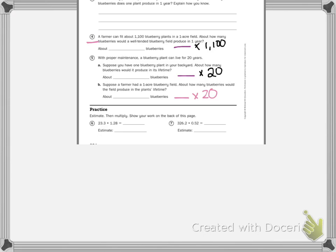Estimate then multiply. Show your work on the back of this page. So my estimate, I'm going to do 23 times 1, that equals 23. So if I have 23.3 times 1.28, I'm going to multiply.